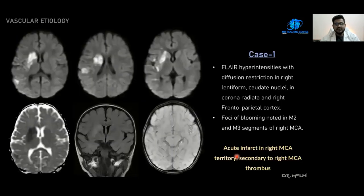The first case falls under vascular etiology. Here we can see FLAIR hyperintensities showing diffusion restriction in the right lentiform and caudate nuclei, corona radiata, and right frontal parietal cortex. Foci of filling defects are noted in the M2 and M3 segments of the right MCA. This is a case of acute infarct in the right MCA territory secondary to right MCA thrombus.